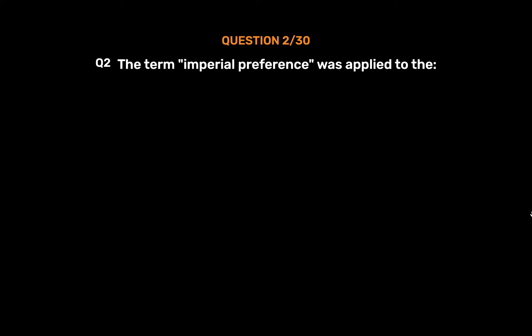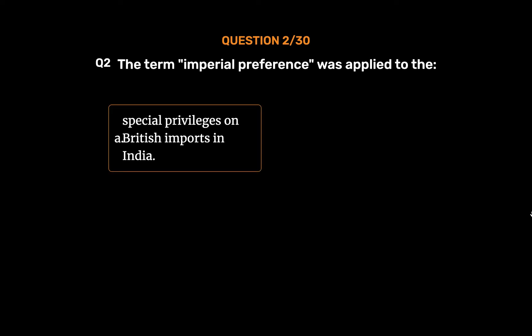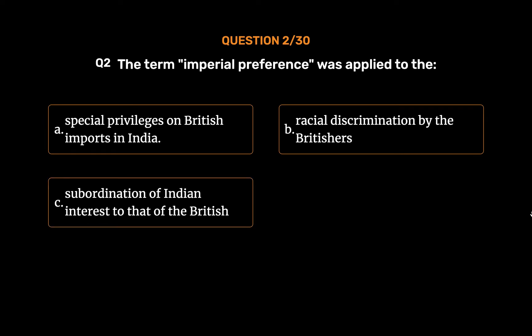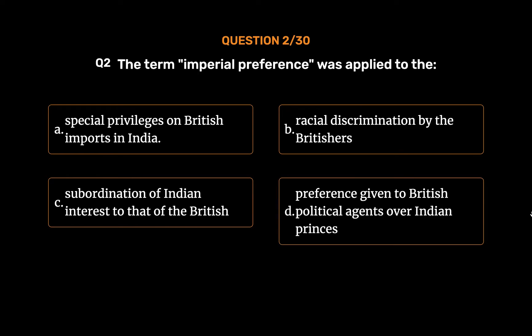Question No. 2. The term 'imperial preference' was applied to: Option A: Special privileges on British imports in India. Option B: Racial discrimination by the Britishers. Option C: Subordination of Indian interest to that of the British. Option D: Preference given to British political agents over Indian princes. The correct answer is Option A: Special privileges on British imports in India.